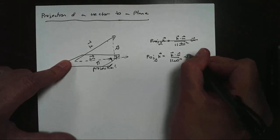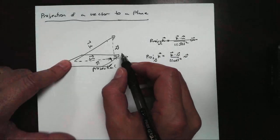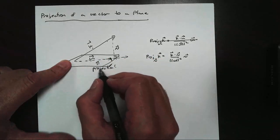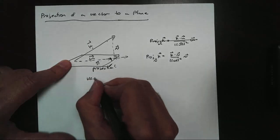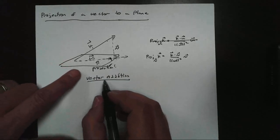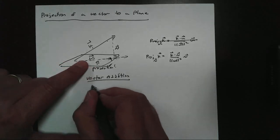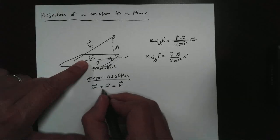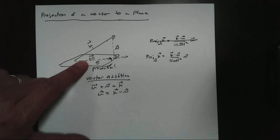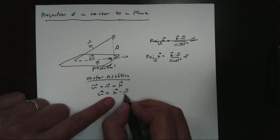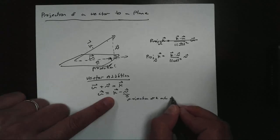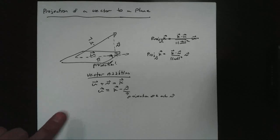Let's talk about why we do this. If I know K and I know N, and I'm looking for the projection here, I could use vector addition to solve for the projection I want. Because I know U plus the normal projection has to equal K, and I can solve for it. U — which is the projection I want — will equal vector K minus the projection of K onto N.